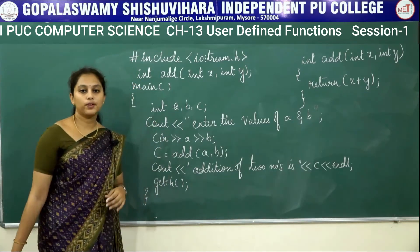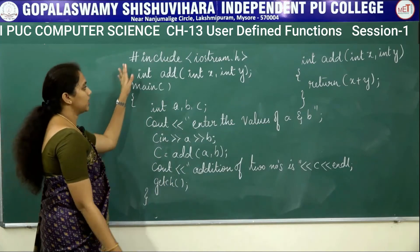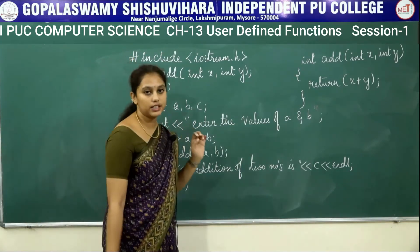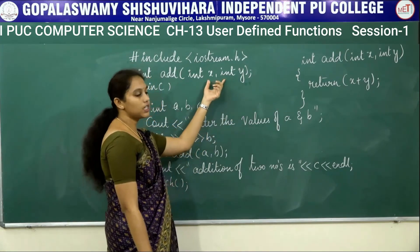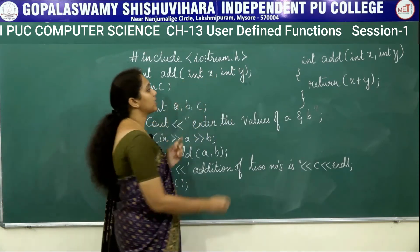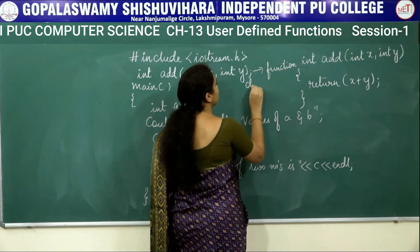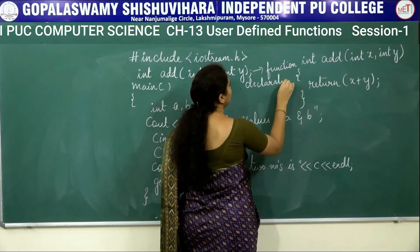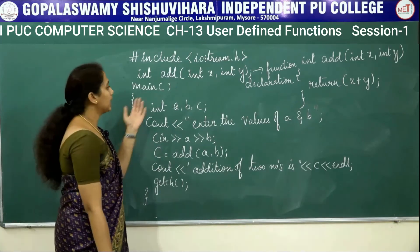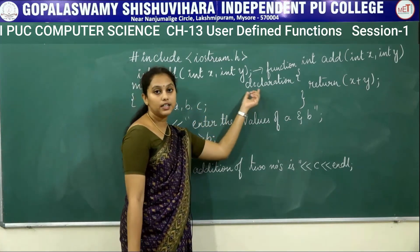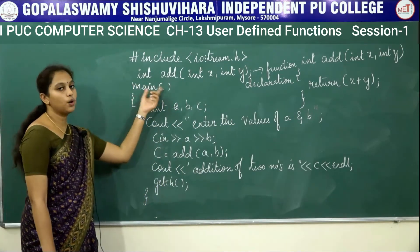This program is to add two numbers using a function. The first section is the preprocessor directive section. Next, 'int add(int x, int y)' — this is called the function declaration. Like other variables which are declared before use, we are declaring the function here in the global declaration section. Next is void main.